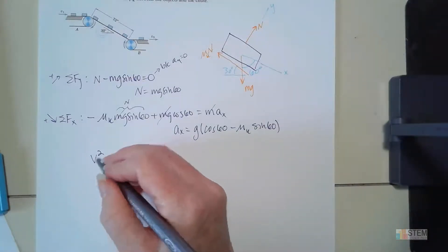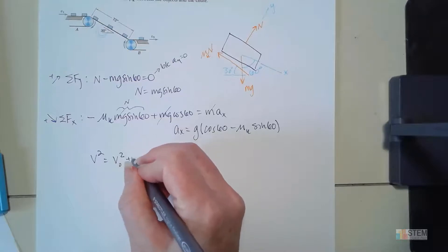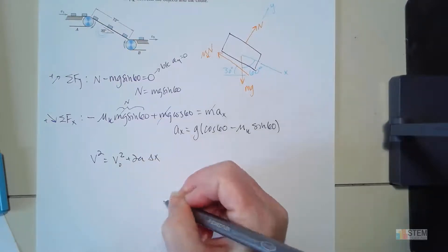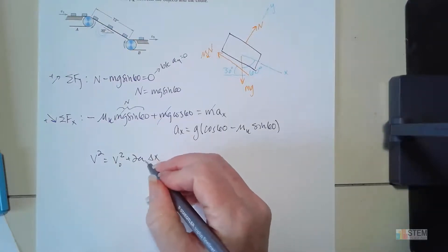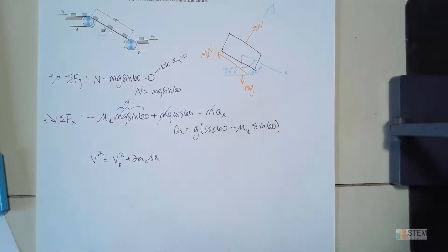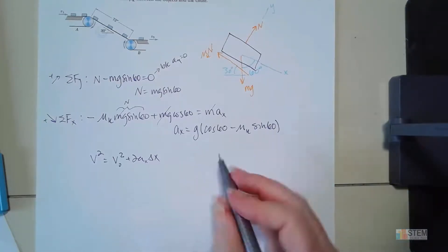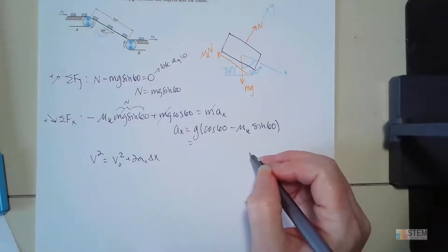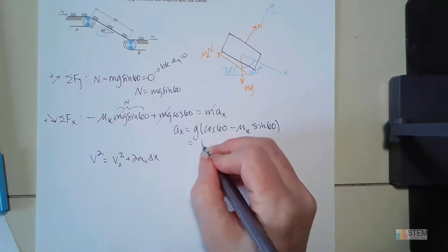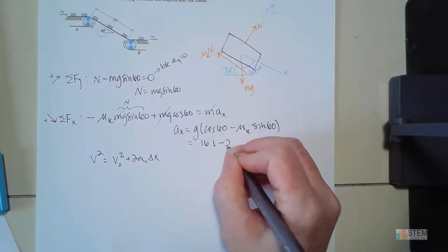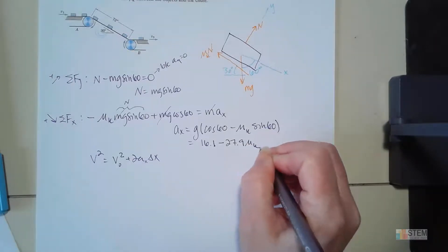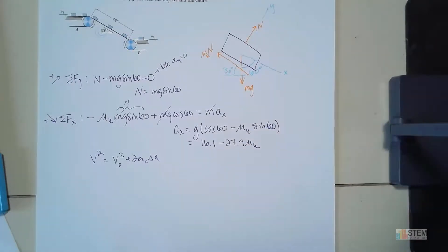And the one I picked was v squared equals v naught squared plus 2a delta x. And this a here for this problem will be ax. Before we do that, let's simplify this so we don't have to write sine and cosine and all that. So this is going to give us 16.1 minus 27.9 mu. So now let's plug this into right here.